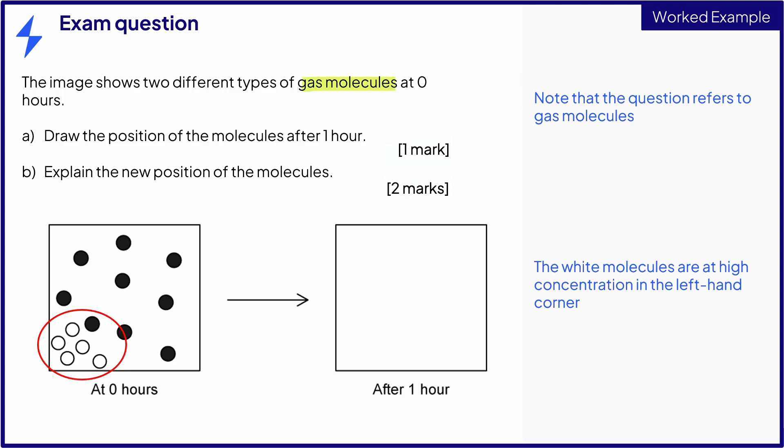You can see that at zero hours the white molecules are in high concentration in the left-hand corner and the rest of the container has no white molecules. So we would expect these molecules to diffuse from a high to a low concentration. The black molecules are already fairly evenly distributed so we would not expect their distribution to change much.